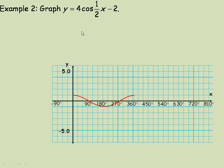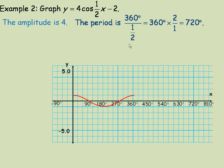In example 2, we graph y equals 4 cos(½x) minus 2. The 4 tells us the amplitude is 4. The ½ multiplied by x is a stretch that makes the period longer. The period is 360 degrees divided by ½, and dividing by ½ is the same as multiplying by 2, so 360 times 2 is 720 degrees. The minus 2 at the end is a vertical translation 2 units down.